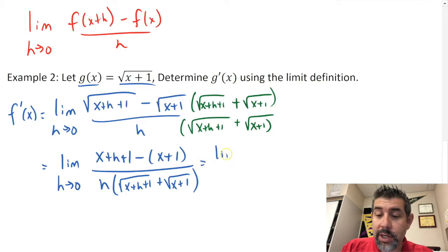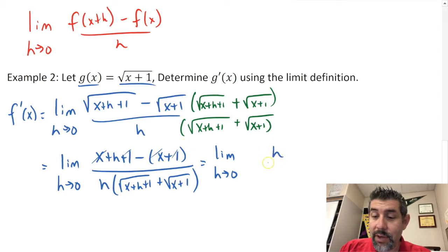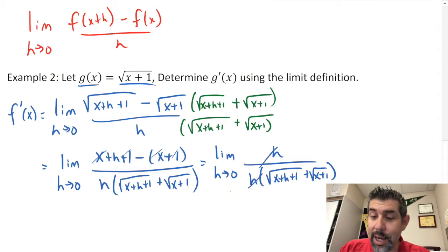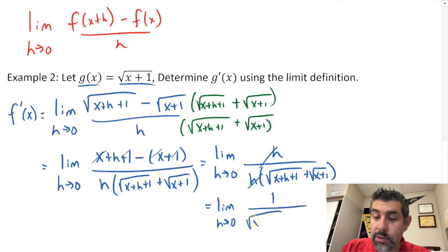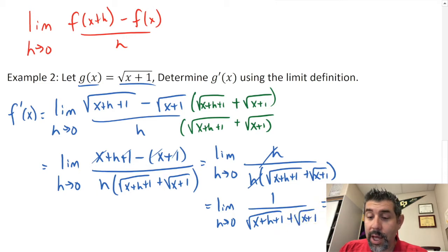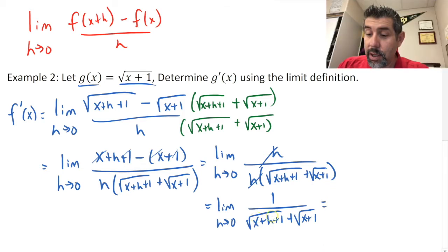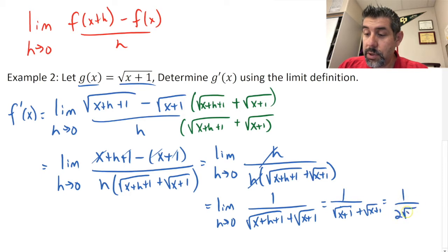The conjugate eliminates the square roots in the numerator nicely. When we distribute, the x terms and the 1 and minus 1 cancel, leaving just h on top. So we get h over h times (square root of (x+h+1) plus square root of (x+1)). The h's cancel, giving us the limit as h approaches zero of 1 over (square root of (x+h+1) plus square root of (x+1)). Plugging in zero for h gives 1 over 2 times square root of (x+1), and that's our derivative.